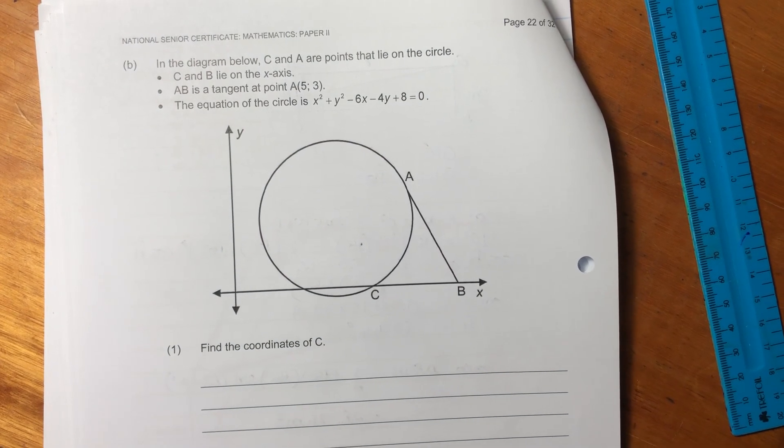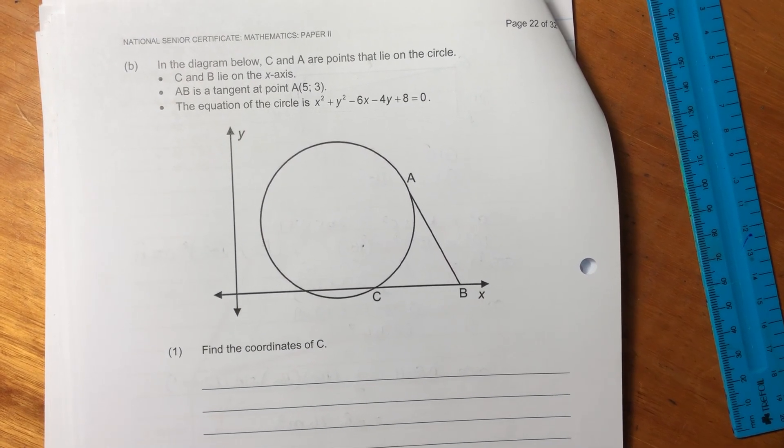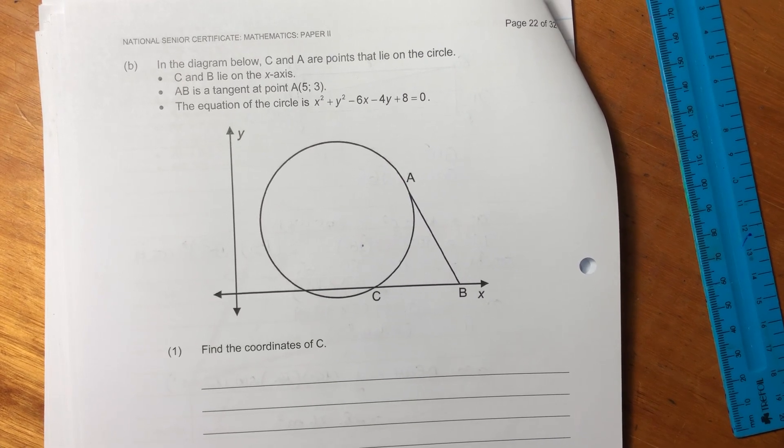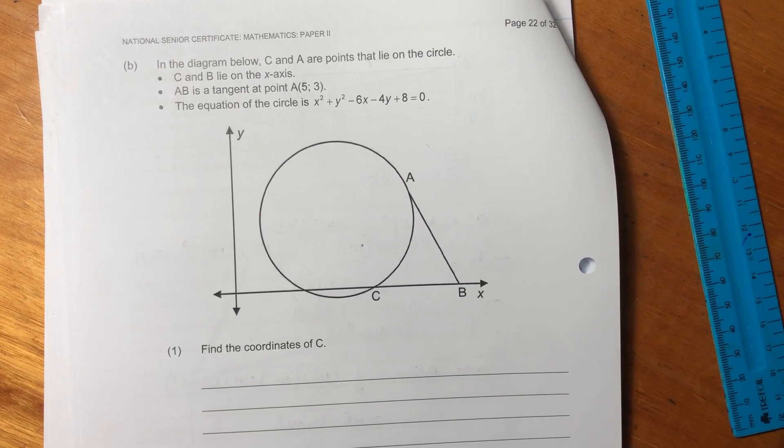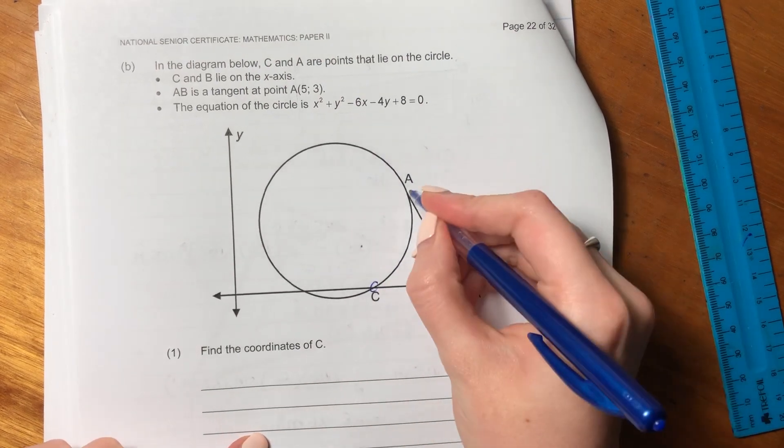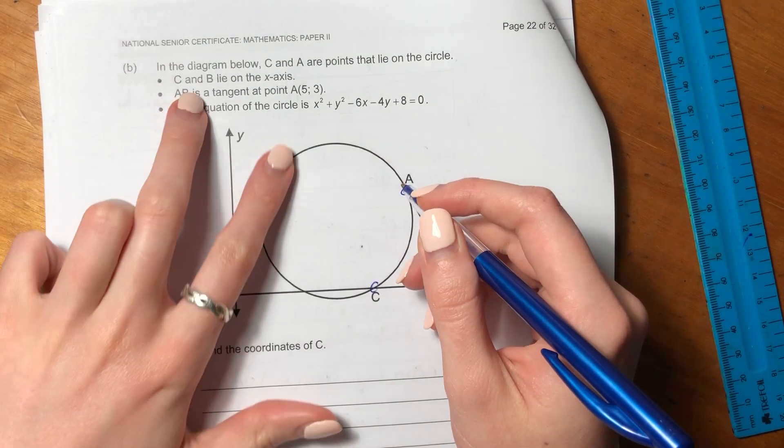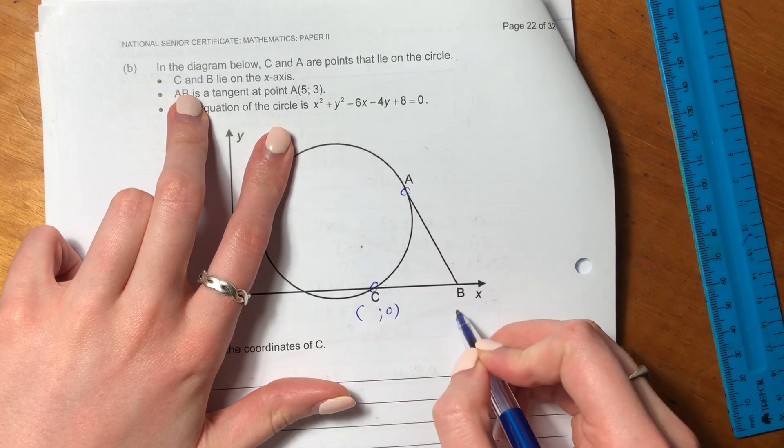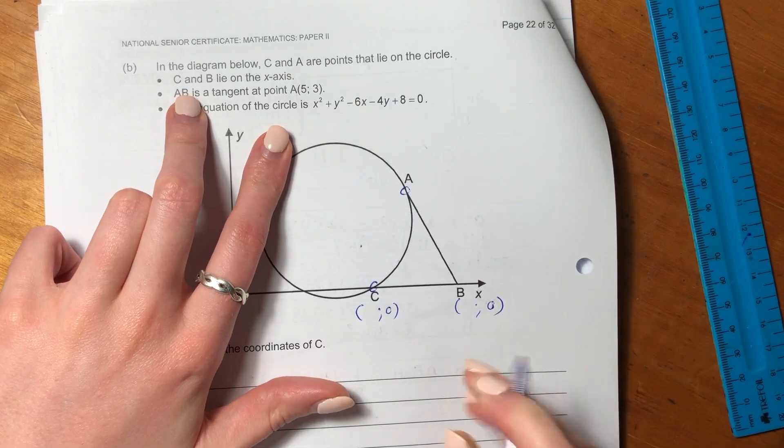Okay, let's now do 9b. Again, geometry. So it says in the diagram below, C and A are points that lie on the circle. So they're both on the circumference over here. It says that C and B lie on the x-axis, so we know that their y values are both going to be zero. That's important.